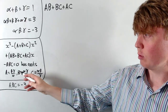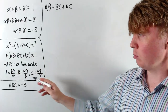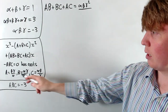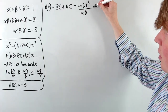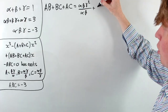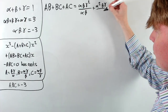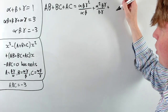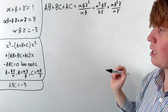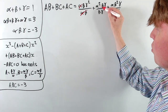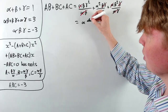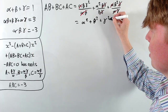Now for the sum of product pairs, we compute AB: beta gamma over alpha times alpha gamma over beta gives alpha beta gamma squared over alpha beta, which simplifies nicely. Similarly BC gives alpha squared beta gamma over beta gamma, and AC gives alpha beta squared gamma over alpha gamma. After cancellation, AB plus BC plus AC reduces to alpha squared plus beta squared plus gamma squared.